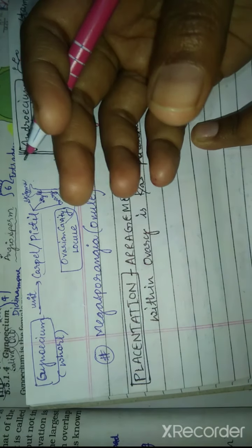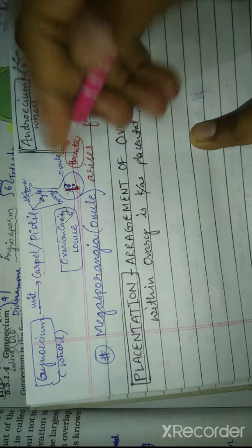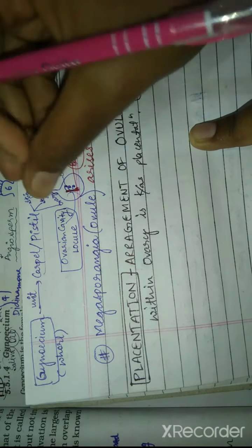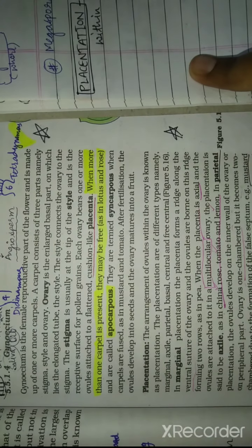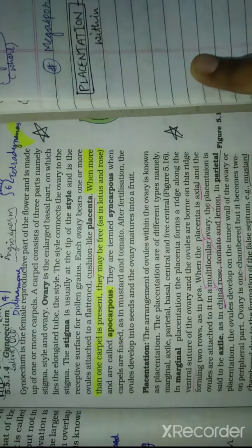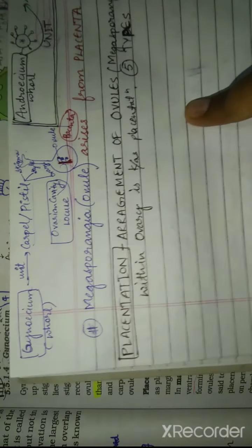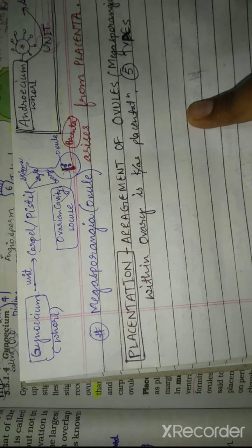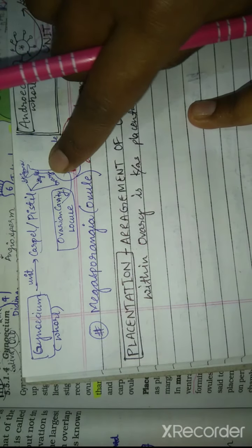Stigma is the receptacle which receives the pollen. Style is the connection - it connects the ovary to the stigma. This is a pipe-like structure. This is our ovary.